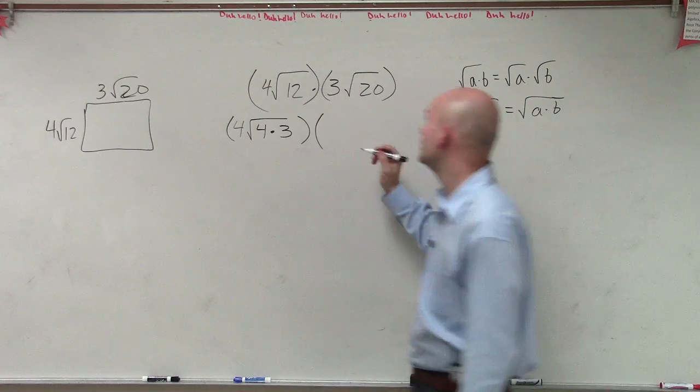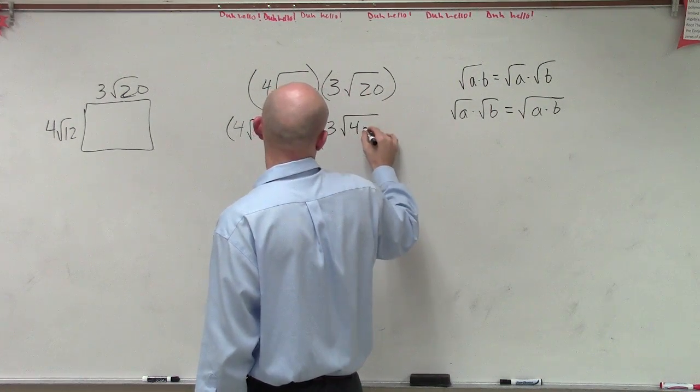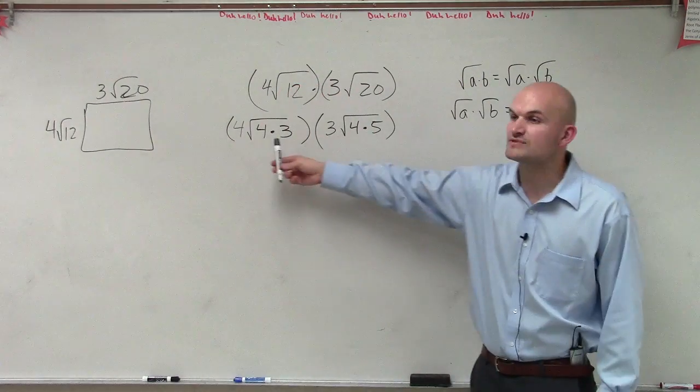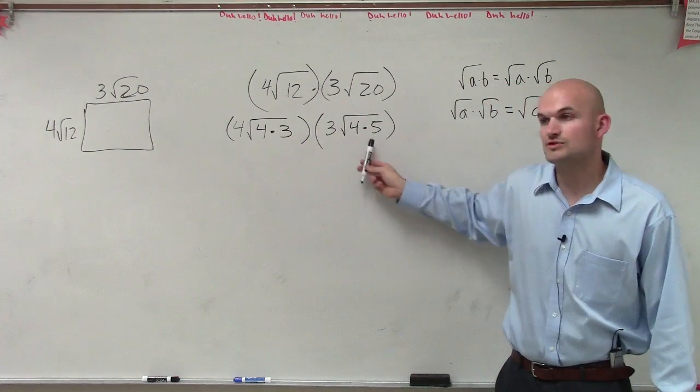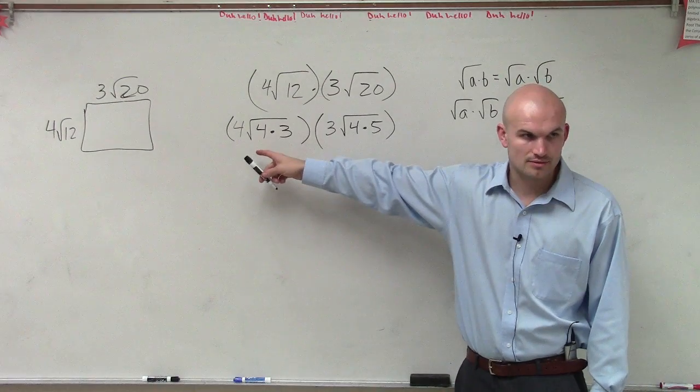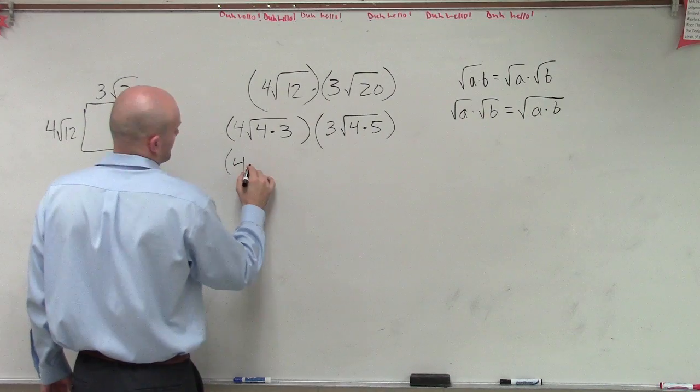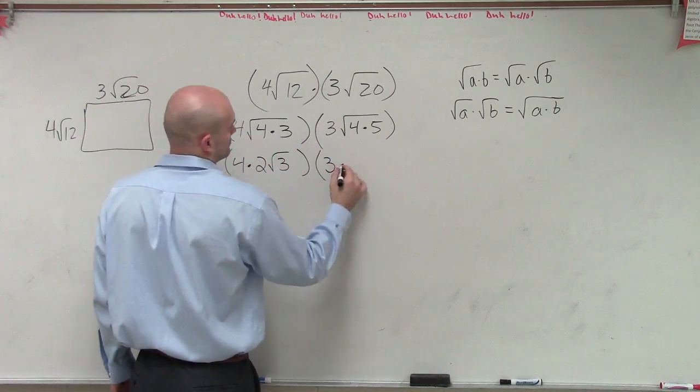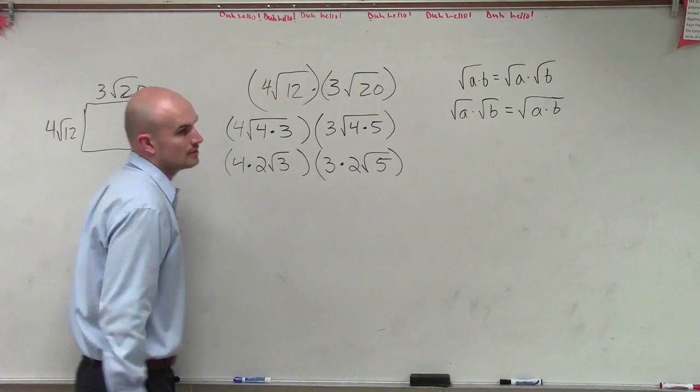So then I say, all right, how can I rewrite 20? Well, I can do that times 3 square root of 4 times 5. And we always want to rewrite them in terms of square numbers. Always in terms of square numbers, where 4 is our square number. Because now, can I take the square root of 4? Yes.